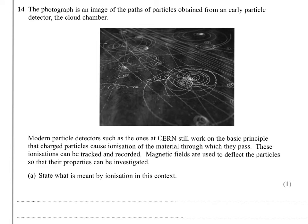Question 14, the photograph is an image of the paths of particles obtained from an early particle detector called the cloud chamber. Modern particle detectors such as those in CERN still work on the same basic principle that charged particles cause ionization of the material through which they pass. These ionizations can be tracked and recorded. Magnetic fields are used to deflect the particles so that their properties can be investigated.